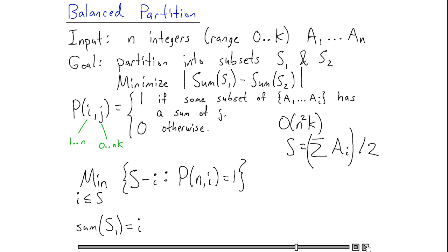If I look at the remaining elements, and I call that set s2, then I know that that remaining set has a sum equal to twice s minus i, because all of the elements a1 through an sum up to 2s.